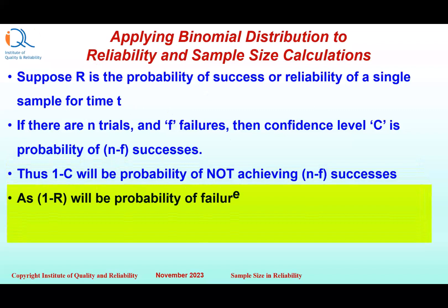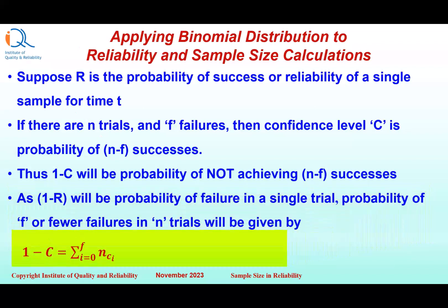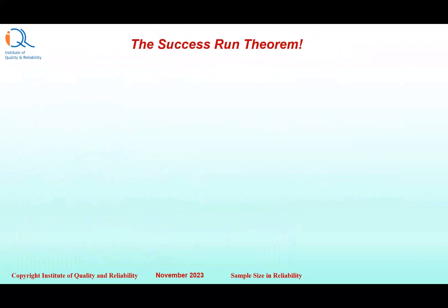As 1 minus R will be the probability of failure in a single trial, the probability of F or fewer failures in N trials is given by 1 minus confidence level C, which equals the summation from I equals 0 to F of NCI times 1 minus R raised to the power I times R raised to the power N minus I. In a previous video, we have seen the application of the Success Run Theorem. Now let us see the mathematical derivation of the Success Run Theorem.